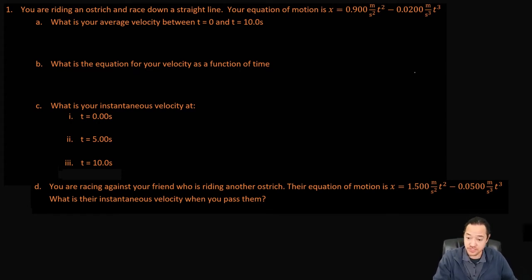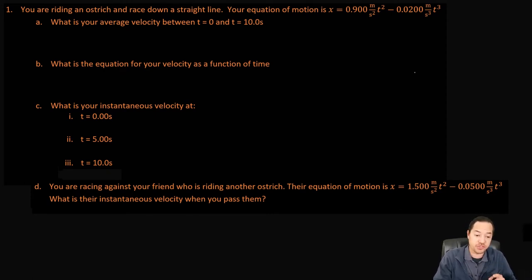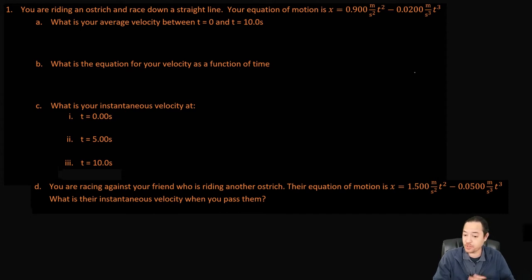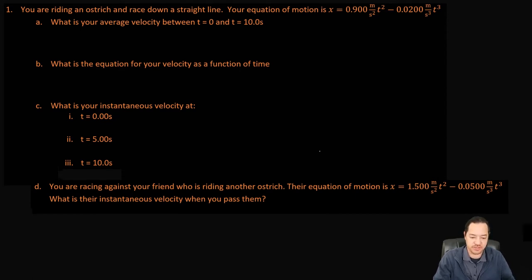Question one says that you are riding an ostrich and race down a straight line. Your equation of motion is x equals 0.9 meters per second squared t squared minus 0.02 meters per second cubed t cubed. So what is your average velocity between t equals 0 and t equals 10.0 seconds?